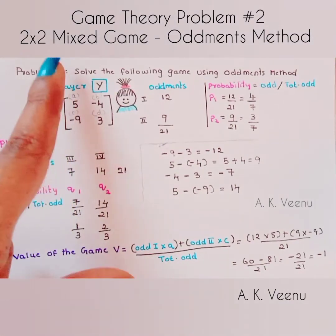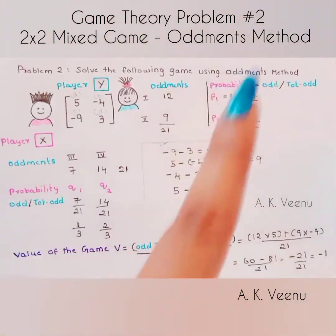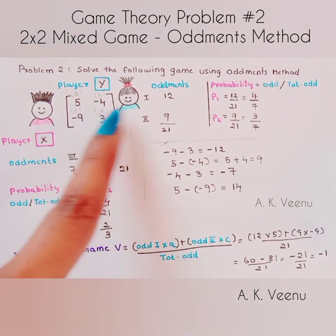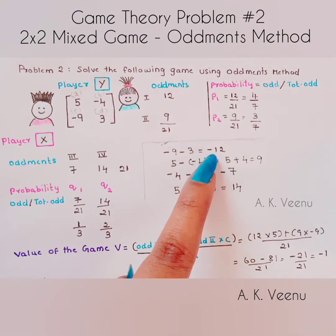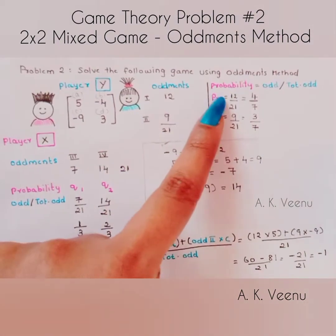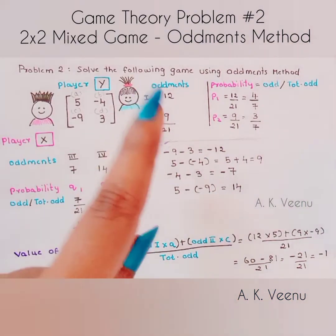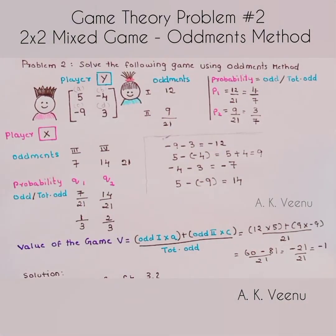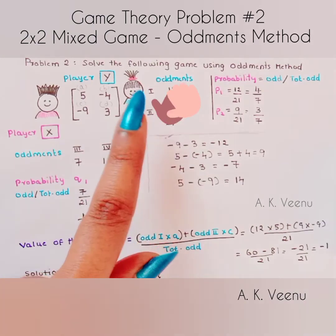To summarise, we solved a 2x2 mixed game payoff matrix with no saddle point using the oddments method. To find oddment 1, subtract the elements of the second row. To find oddment 2, subtract the elements of the first row and ignore the negative sign. Using the oddments, find the probability of each player with the formula: oddment divided by total oddment. Find the value of the game by multiplying the oddment into the first column elements. If the value is negative, the game is favourable to player Y.